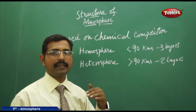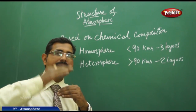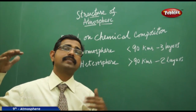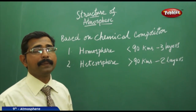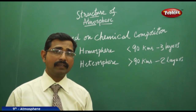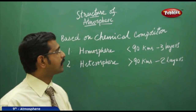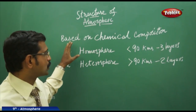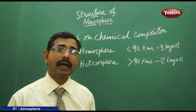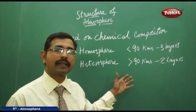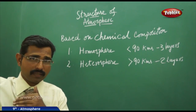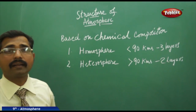The homosphere exists from the earth's crust up to 90 km. Above 90 km you can see the heterosphere. The homosphere is further divided into three layers based on density: the troposphere, stratosphere, and mesosphere. In the heterosphere we find the ionosphere, also called the thermosphere, and the exosphere. The thermosphere and exosphere are located above 90 km from the earth's surface, where satellites and other spacecraft are found.